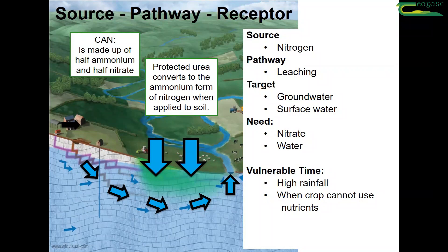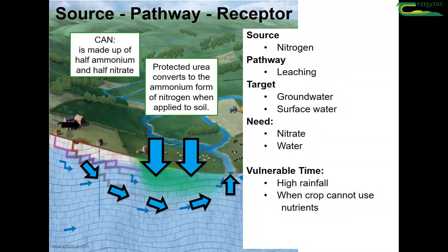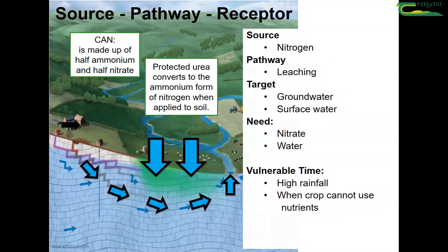The plant, of course, can use both of these forms of nitrogen. Now look at protected urea. Protected urea converts to the ammonium form of nitrogen when applied to soil, and therefore the nitrogen is now in a safer form and less likely to be leached to the environment.